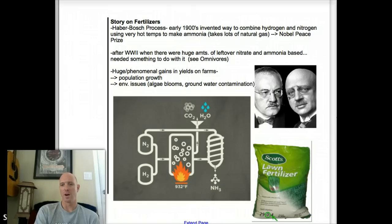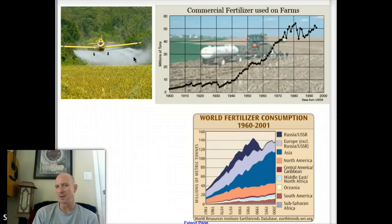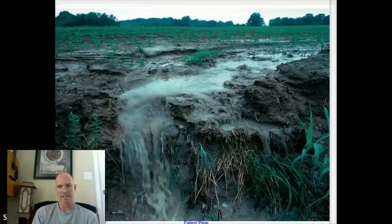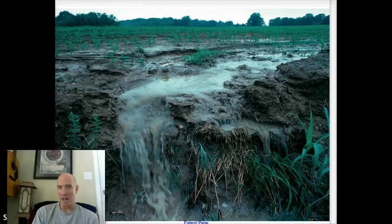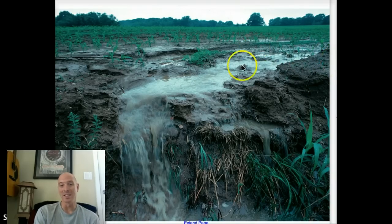The other thing is that farmers — why wouldn't you go big on fertilizer? If you use too little, maybe you don't grow as much food. So you're going to use a little extra as an insurance policy. We've got a lot of people habitually over-fertilizing. And then it rains, and here comes another environmental problem. Besides groundwater contamination and blue baby syndrome — where it gets into the groundwater, people drink it, and it causes really bad health problems — you also get this runoff going.